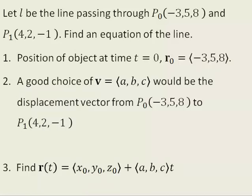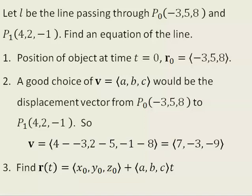A good choice of v would be the displacement vector from p-naught to p-one. In that case, v is equal to (7, -3, -9), the displacement from p-naught to p-one.